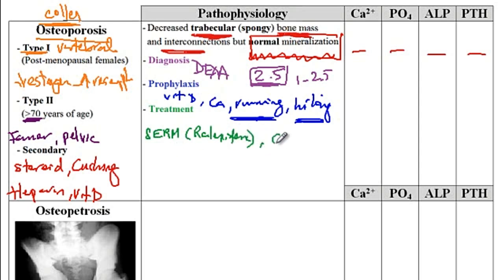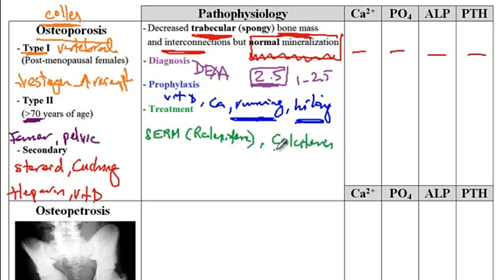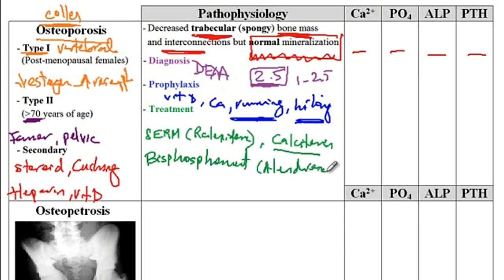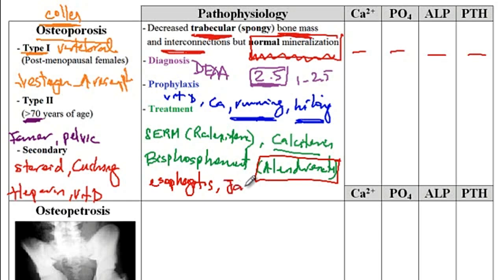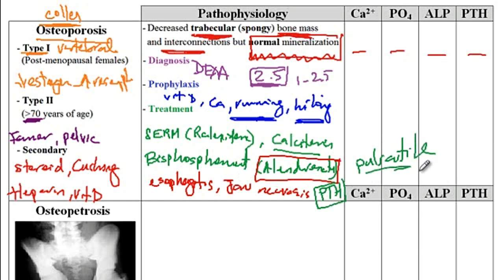Other medications include calcitonin, which is naturally produced by the parafollicular C-cells of the thyroid and inhibits the function of osteoclasts. Bisphosphonates like alendronate bind to the hydroxyapatite and interfere with the function of osteoclasts, thus interfering with breakdown of bone. Be aware of the side effects of alendronate, which include erosive esophagitis as well as jaw necrosis. Finally, pulsatile parathyroid hormone is also used for treatment of osteoporosis.